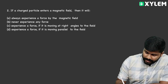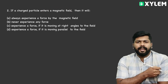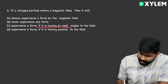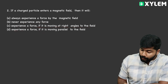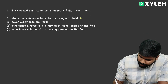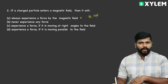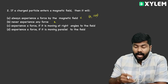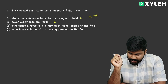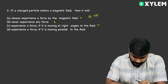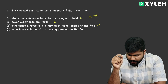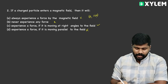Next question: If a charged particle enters a magnetic field, the options are: always experience a force by the magnetic field; never experience any force; experience a force if it is moving at right angle to the field. If the particle moves parallel or anti-parallel, there is no force. Force is experienced only at 90 degrees — perpendicular to the field. Correct option: Option C.